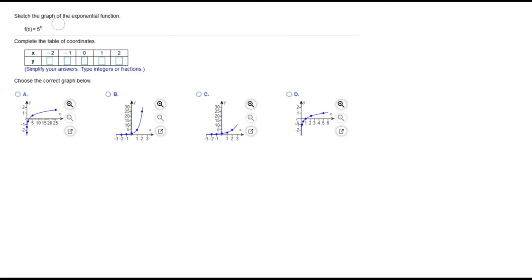This question says sketch the graph of the exponential function f of x equals 5 to the x. This is an exponential function because the variable is in the exponent. We're given this table to fill out before we graph it.